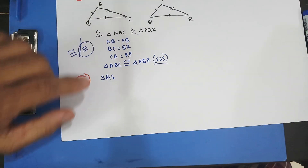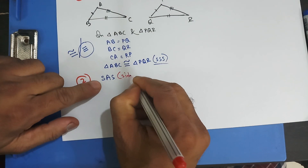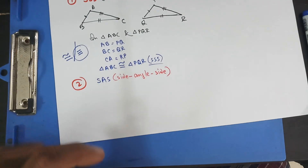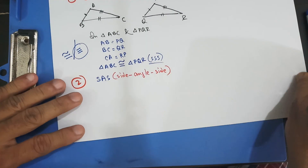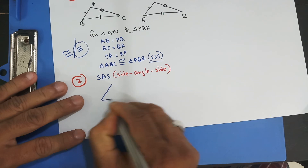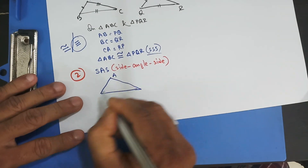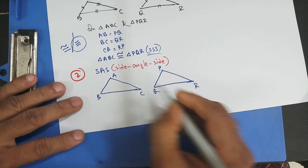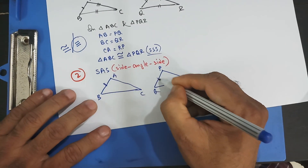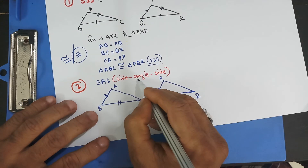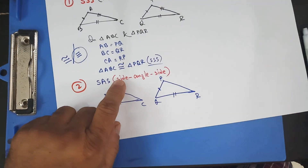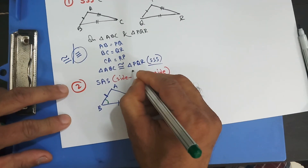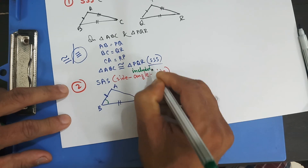SAS means side, included angle, side. Now this angle is a little special — it's the included angle, which I'll come to in a second. Let me draw triangles ABC and PQR. Let's say this side equals this side, this side equals this side, and the angle in between those two sides — the included angle — must also be equal.